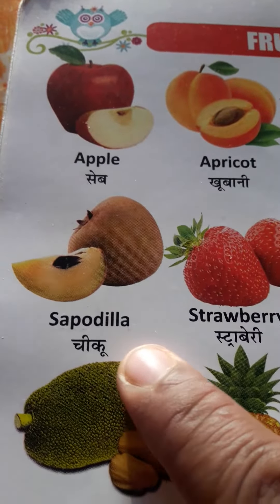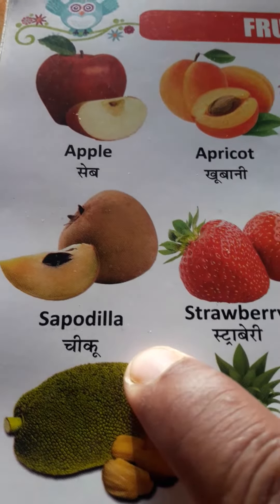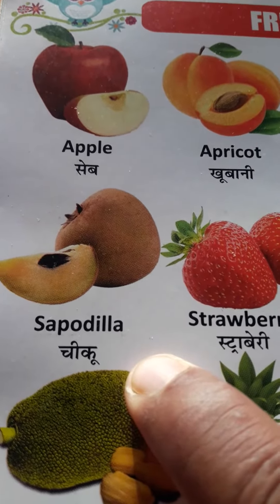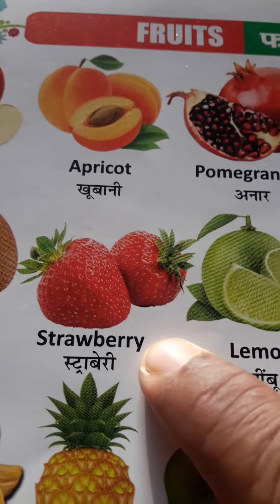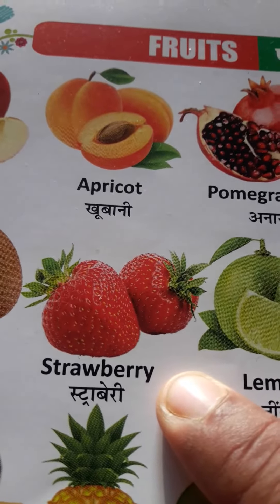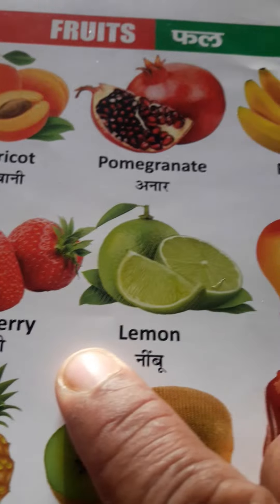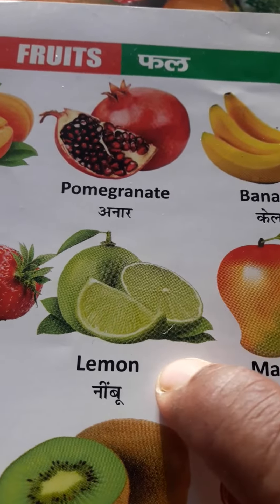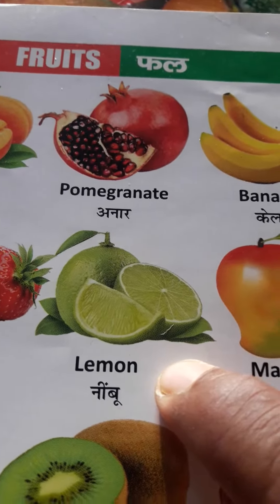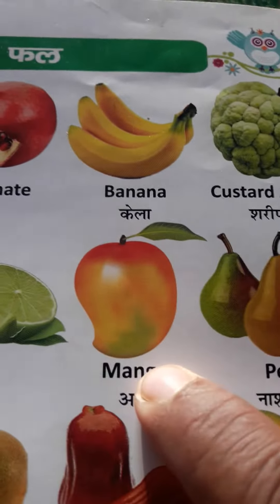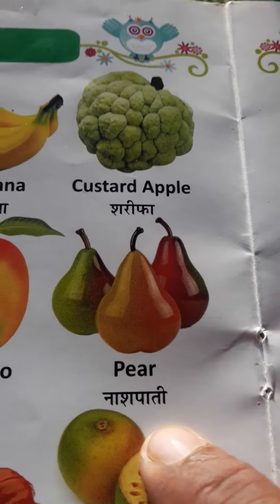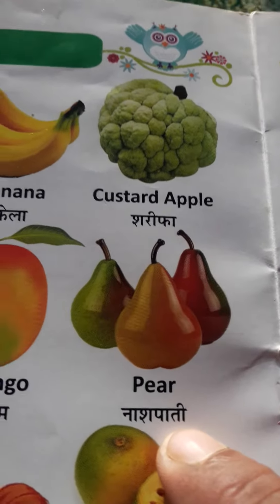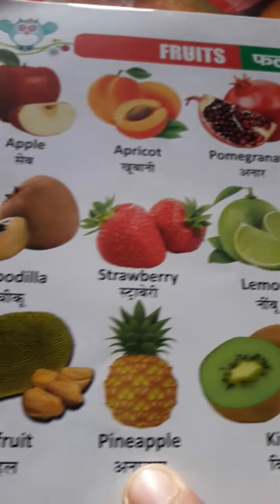Shepodilla means chiku. Strawberry means strawberry. Lemon means neembu. Mango means aam. Peer means nashpati.